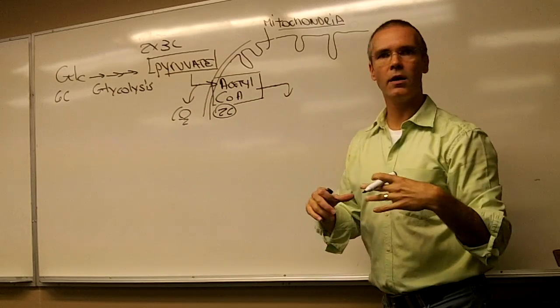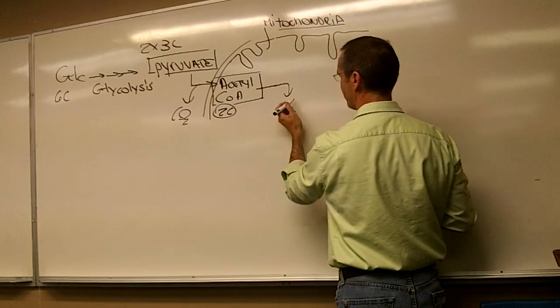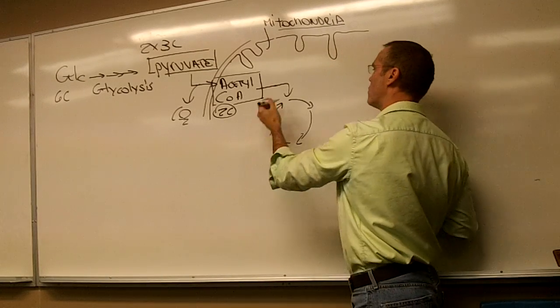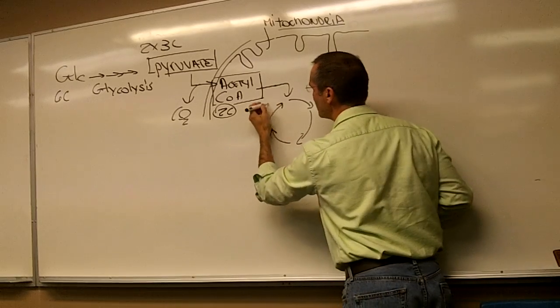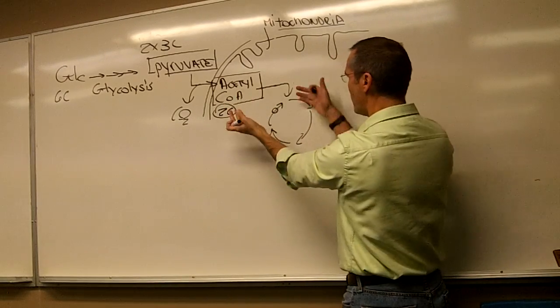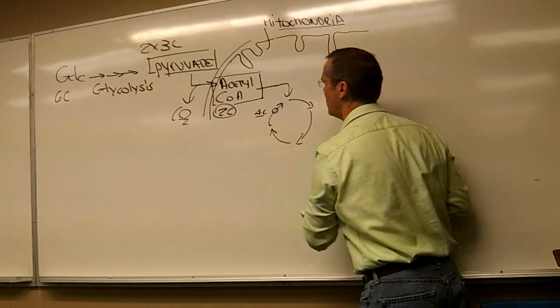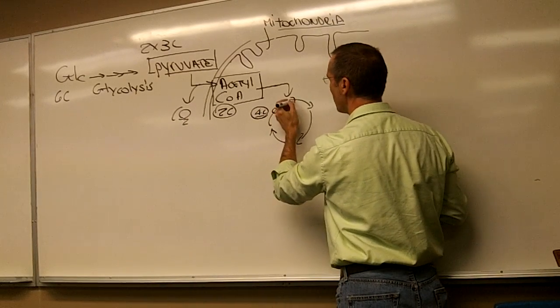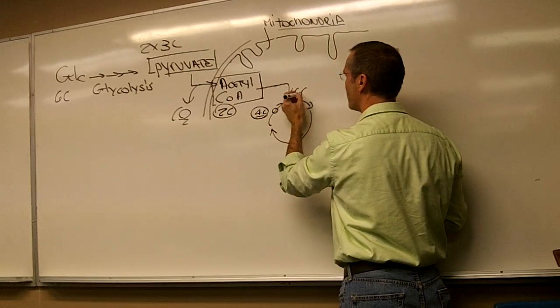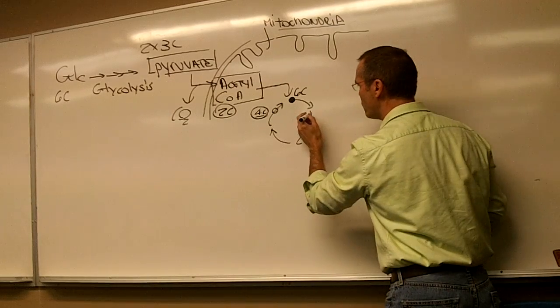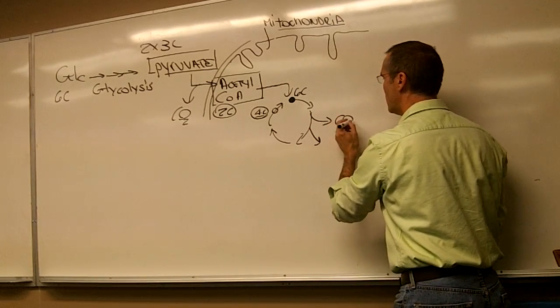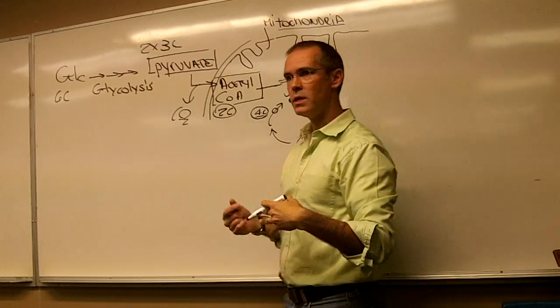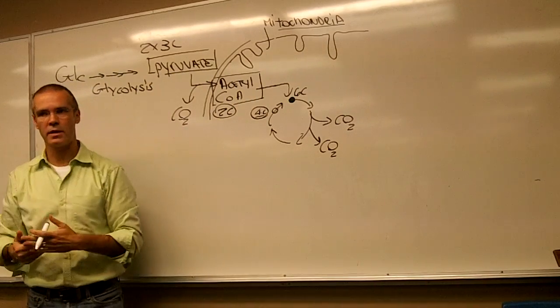Which is called the citric acid cycle, and produces different molecules that go round and round and round. And the last molecule here to accept this, they will merge together, is a four carbon molecule. So, four carbon molecule plus two carbons equals, right here, a metabolite, a molecule that has six carbons. These carbons will be extracted somewhere in this cycle into carbon dioxide, which is a waste for us. We breathe it out, we exhale carbon dioxide. That's where it's coming from.